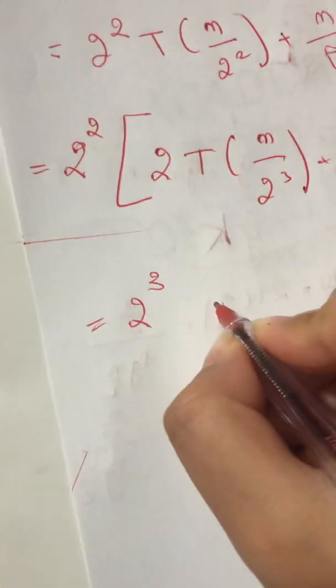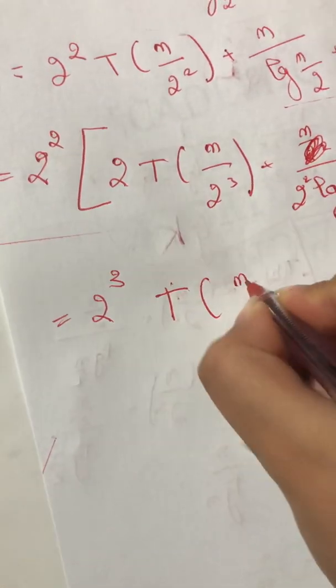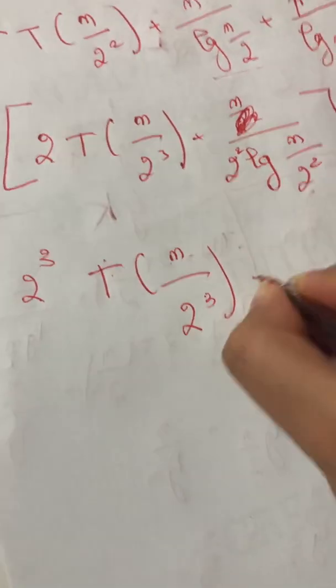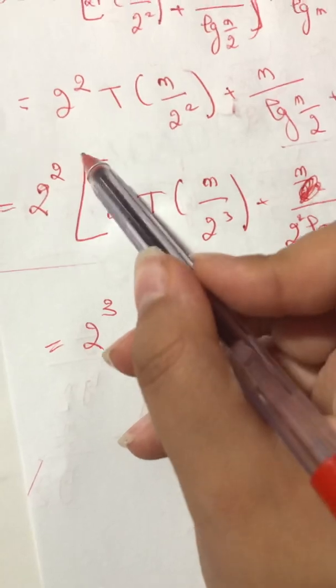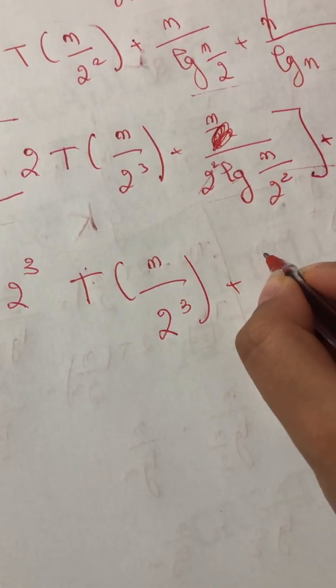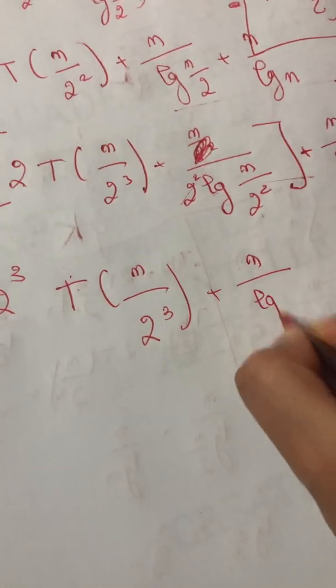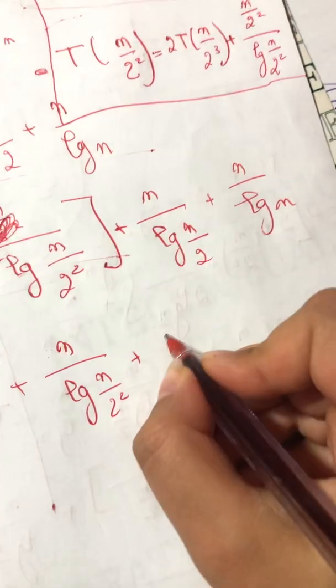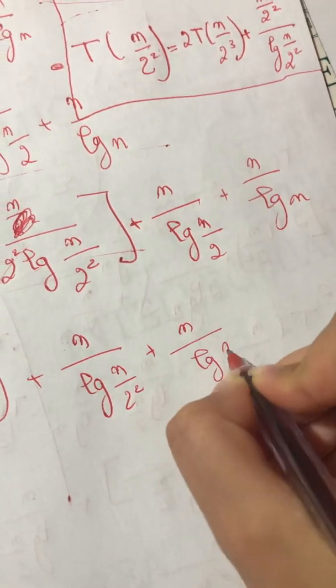T(n/2^3) plus—I want to divide this with this—so it's n log(n/2^2) plus. I copy the rest of the equation: log(n/2) plus n log n.